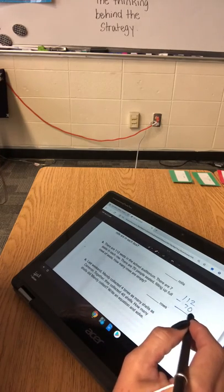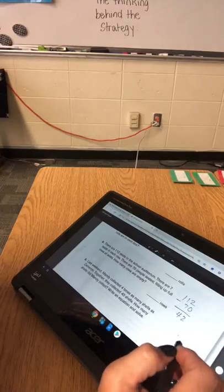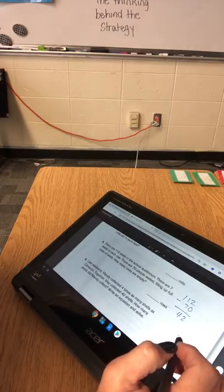So 2 minus 0 is 2 and 11 minus 7 is 4. So we have 42 open seats in the auditorium.